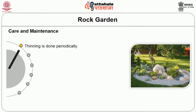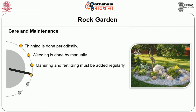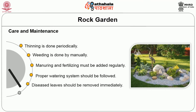Current maintenance of rock garden: thinning is done periodically, weeding is done manually, manuring and fertilizing must be added regularly, proper watering system should be followed, diseased leaves should be removed immediately, and dead leaves and shoots should be frequently removed.